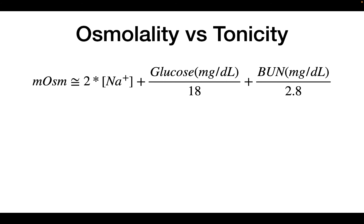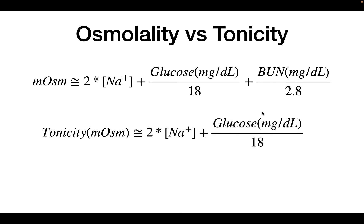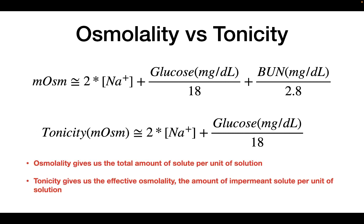Osmolality is simply the sum of all the concentrations of solutes — both permeable and impermeable. This equation is used to estimate the osmolality of our blood. Tonicity, on the other hand, only includes impermeant solutes. So osmolality gives us the total amount of solute per unit of solution, while tonicity gives us the effective osmolality — the amount of impermeant solute per unit of solution. It is tonicity that determines water movement.